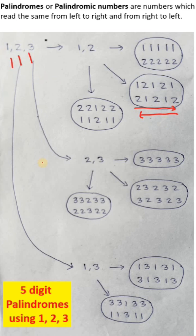Now, let us find 5-digit palindromes using the digits 1, 2, and 3. So these are the digits 1, 2, and 3.